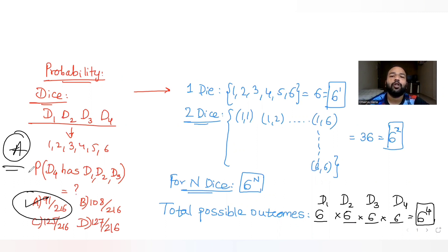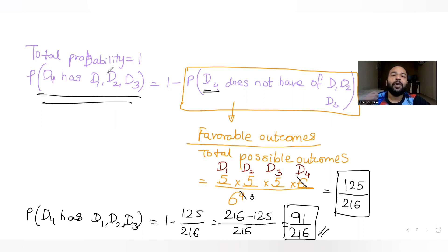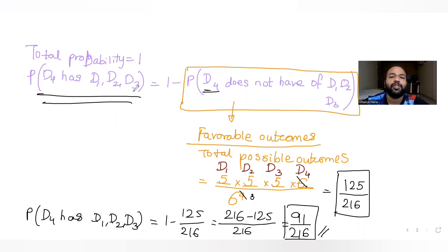I hope you have understood how to solve this question on dice in terms of probability. We used the complementary approach — finding the opposite probability and then doing 1 minus that gave us the required answer. I will meet you again tomorrow with the next question. Till then, you can like, share and subscribe to my channel, and share these videos with your friends preparing for JEE.